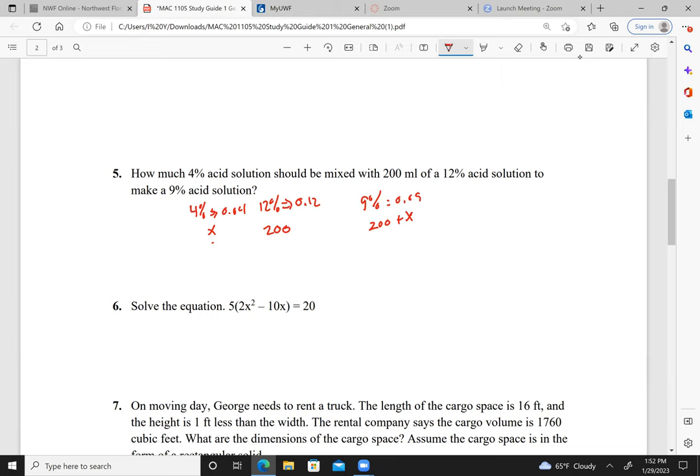Now the way to solve this, simply multiply the percentage by the amount you have: 0.04x. And we're adding 0.12 times 200. And it should give us 0.09 times 200 plus x. So 0.04x, this becomes plus 24 equals 18 plus 0.09x. Go ahead and subtract. I get 0.05x.